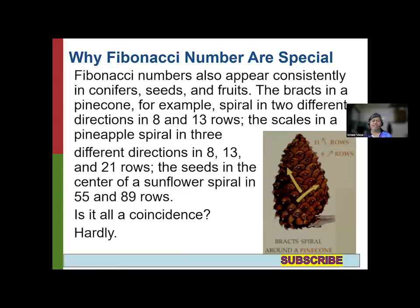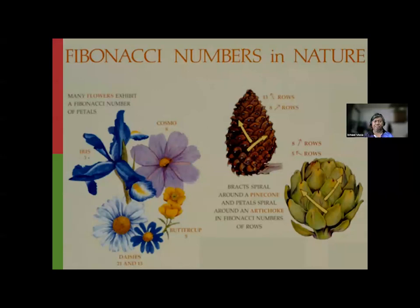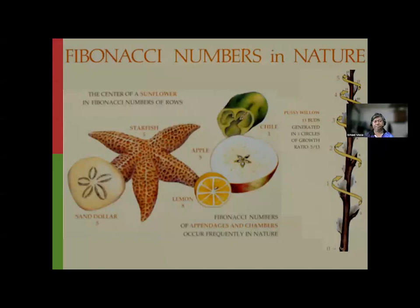Fibonacci numbers also appear consistently in conifer seeds and roots. The bracts in a pinecone, for example, spiral in two different directions — in 8 and 13 rows — both Fibonacci numbers. The seeds in the center of a sunflower spiral in 55 and 89 rows. Is it a coincidence? I think not. Fibonacci numbers in nature also appear in buttercup, cosmos, orange, rose, starfish, sand dollar, and lemon.